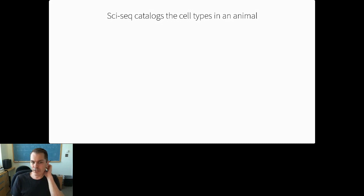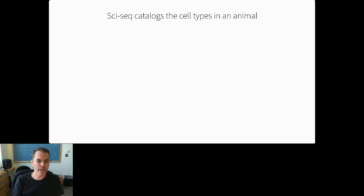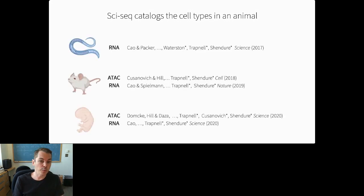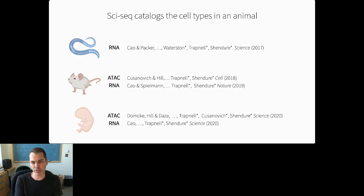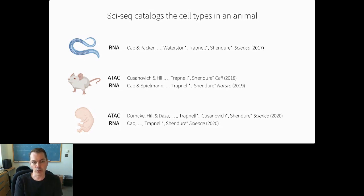Over the last couple of years, Jay's lab and mine have worked with collaborators to profile gene expression and chromatin accessibility in worms, mice, and more recently human fetal tissues to build cell atlases using SciSeq. The throughput has dramatically improved—from thousands of cells in the worm experiment to around four million cells in the human fetal atlas gene expression experiment, representing orders of magnitude increases in throughput over the last couple of years.